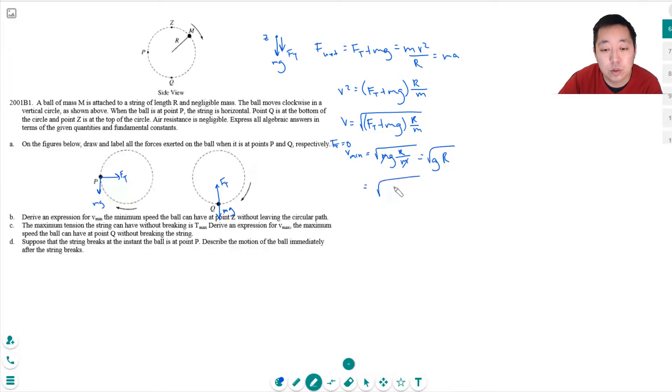And that's equal to the square root of 9.8 meters per second squared times R. What do they say R was? R was... Oh! Just in terms, yeah, they didn't give you numbers.